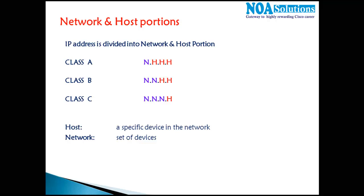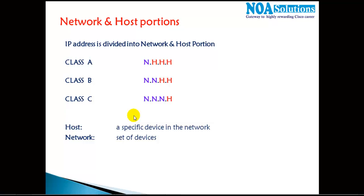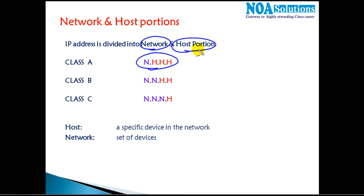The next thing we need to understand about IP addressing is the network and host portions. Whatever addresses we have, the four portions of an IP address are further classified into two parts: the network part and the host part. When we say 'host,' it refers to a single device in the network.